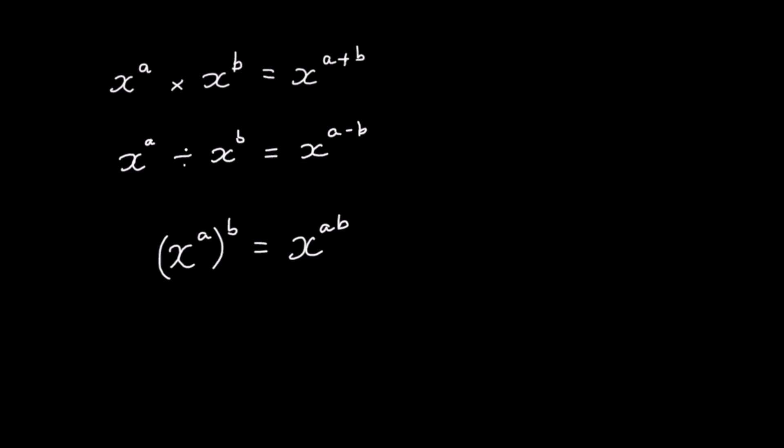In this video we're going to be looking at the rules of indices. I've got three rules on the screen now. We've got x to the power of a times x to the power of b equals x to the power of a plus b. When we multiply numbers of the same base, we add the powers. The second rule: when we divide we subtract the powers, and when we've got a number raised to another power we multiply the powers. I'm going to go over these one by one and explain why these rules exist.